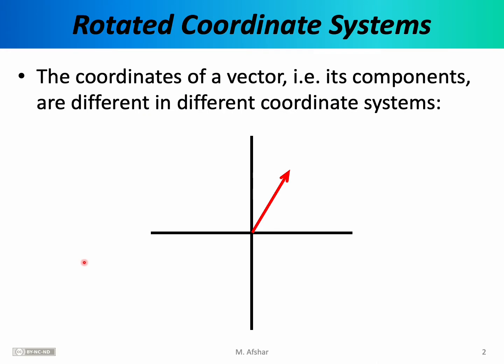We've discussed vectors and their components or coordinates before. It is important to emphasize that the components or coordinates of a vector depend very much on the coordinate system being used. Here in this picture we see a vector — an arrow pointing in some direction with some magnitude — and we also see a standard XY coordinate system with the X axis being horizontal and the Y axis being vertical. If you were asked to calculate the X and Y components of this vector, you would need to know some angles, for example this angle here, which we can call theta. Knowing that angle, you can do trigonometry to find the X component and the Y component of vector V.